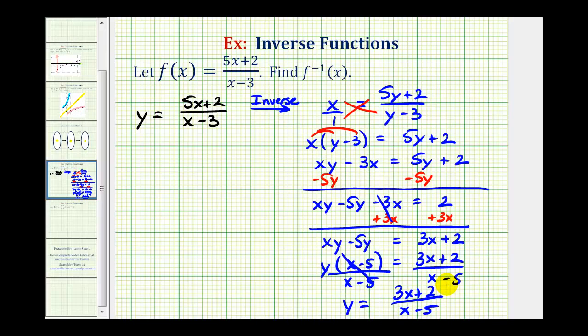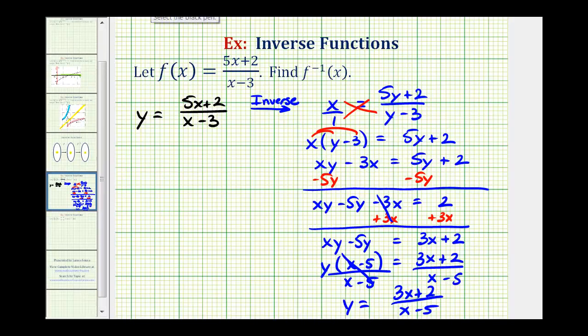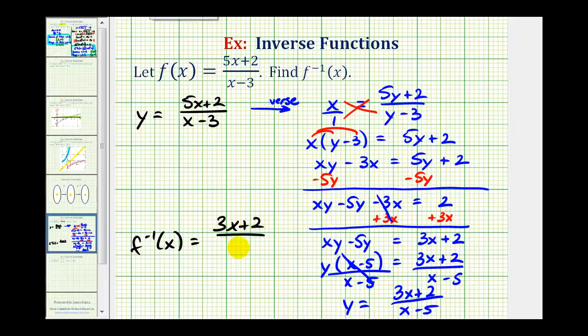So for our last step, let's go ahead and replace y with inverse function notation. f inverse of x is equal to quantity three x plus two divided by the quantity x minus five. So here's the inverse function that we're asked to find.